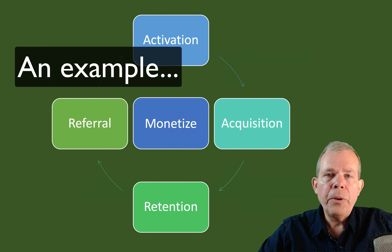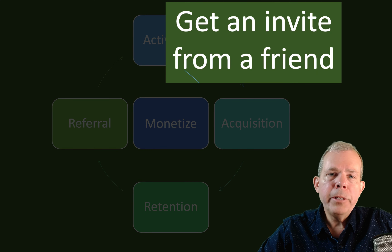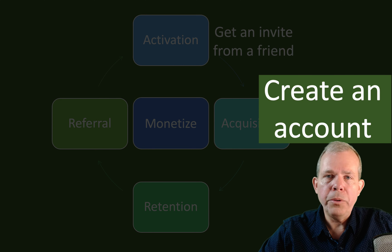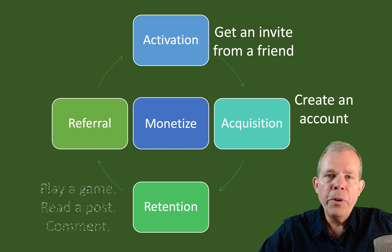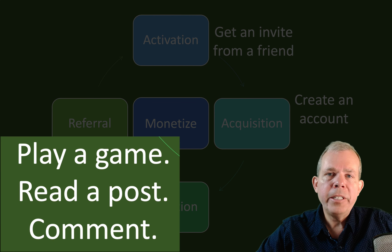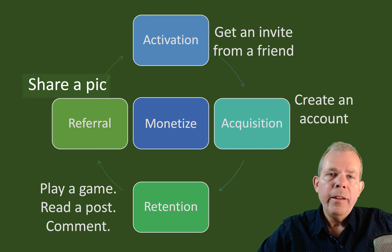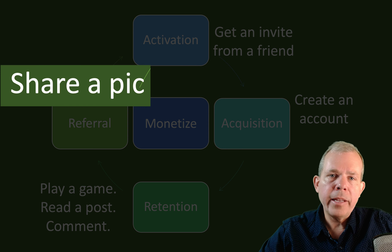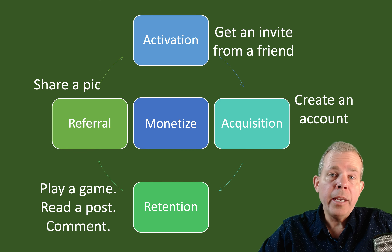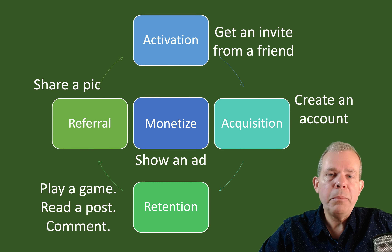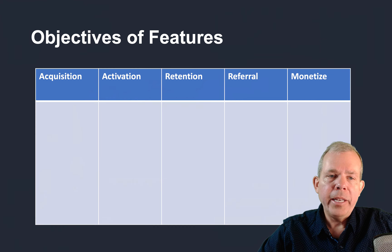Let's give an example using our social app. Activation comes because a friend invited you to respond to a picture. The next step is acquisition — as you log into the account, you're invited to create your own profile. Then you're hopefully going to respond: play a game with them, read a post, or put a comment. Then you share a picture and invite somebody else to look at it, and the cycle repeats. Make sure there's some kind of a monetization play — showing an ad is a pretty typical solution for social media, even if ads aren't always great.